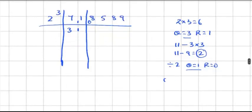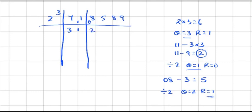Subtract 08 minus 3×1=3, giving 5. Now divide 5 by 2: 2×2=4, so quotient is 2 and remainder is 1, since 5 minus 4 is 1. Carry the remainder 1 down next to the digit 5, making it 15.